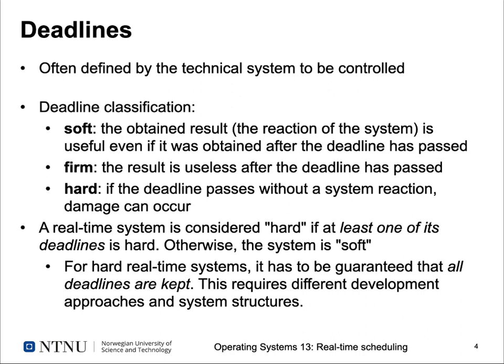First, we have soft deadlines. Soft deadlines means that we calculate some result as the consequence of some external stimuli, and the obtained result — the reaction of our system — might even be useful even if it was obtained after the deadline has passed. For example, you might have a video decoder. Usually you play video at 60 frames per second, and if one frame takes a bit longer to decode, it might still be useful to display that frame — you have a bit of jitter, but you can still see the picture. In addition, you can have firm deadlines, which means if you calculate the result but only finish after the deadline has passed, it's useless and you have to throw it away, but there are no bad consequences from this.